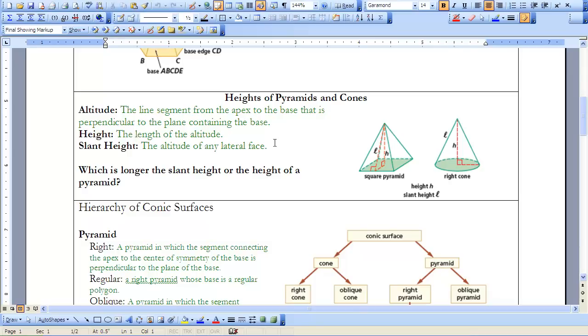The slant height is something different. The slant height is the height of the lateral face. If you look at this triangle right here, that is the altitude or the height of my lateral face. The notation for slant height is often a cursive or italics L.